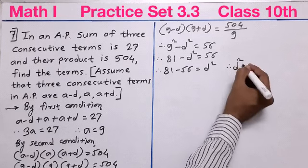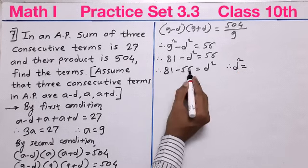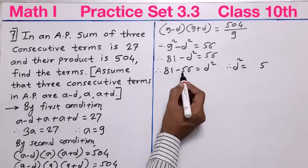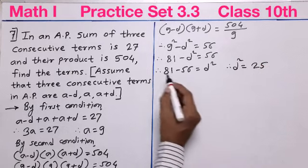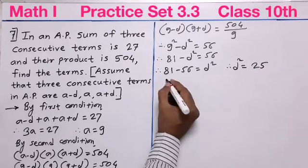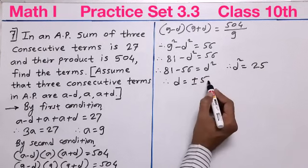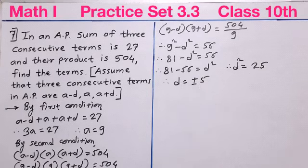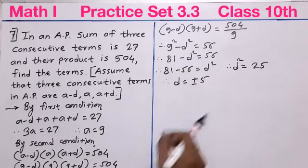Therefore, D squared = 81 minus 56 = 25. Taking the square root on both sides, we get D = plus or minus 5. So D has two values: positive 5 and negative 5. We can take either of them.